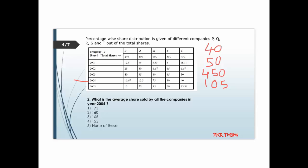40 percent of 450 comes out to 180. Adding all values together gives 825. To calculate the average we divide by 5, which comes out to 165. The answer is option 3.